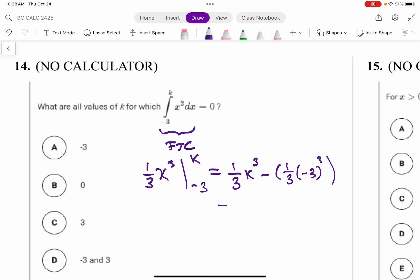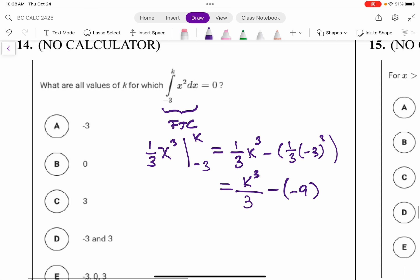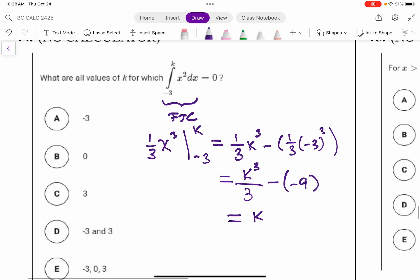Okay, so let's just figure this out. This is k cubed over 3 minus negative 27 thirds, which is negative 9. So now I got k cubed over 3 plus 9, and that's got to equal 0.